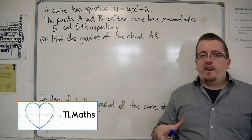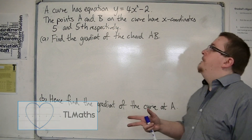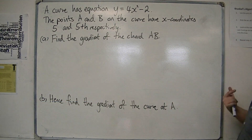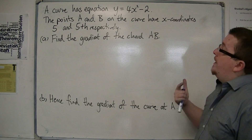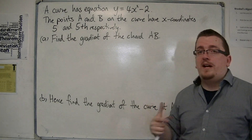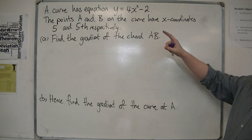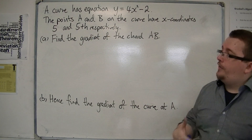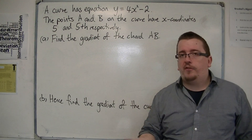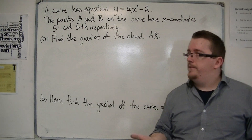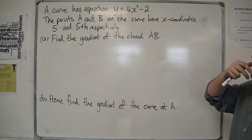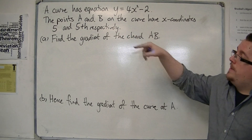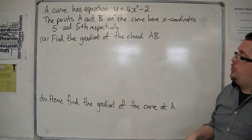I'm going to work through a particular problem here. We're given that a curve has equation y equals 4x squared minus 2, and the points A and B on the curve have x-coordinates 5 and 5 plus h, respectively. So the x-coordinate of A is 5, and the x-coordinate of B is 5 plus h.